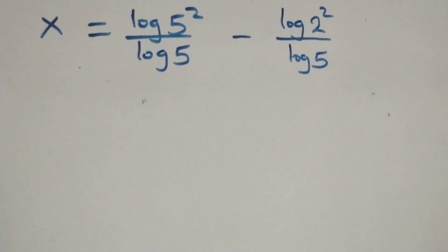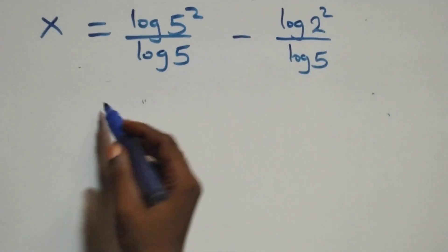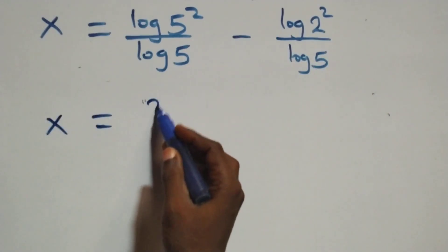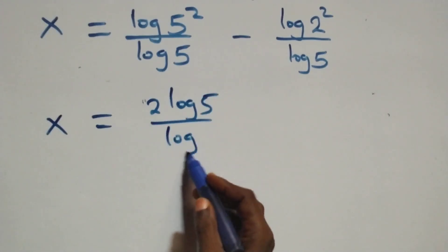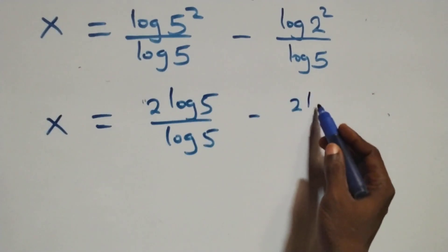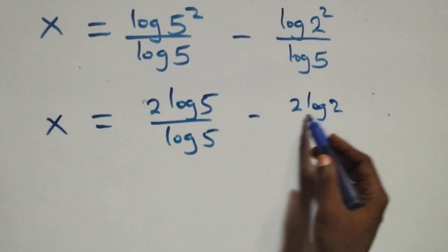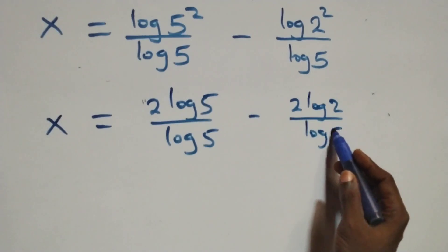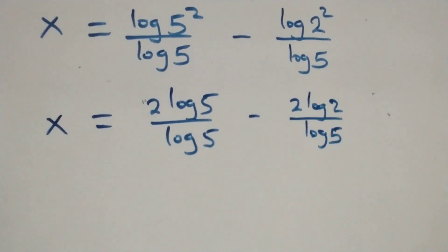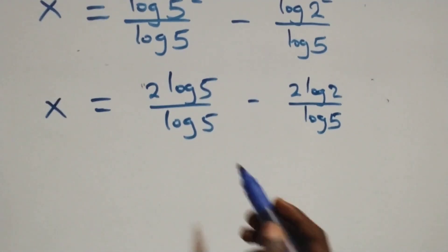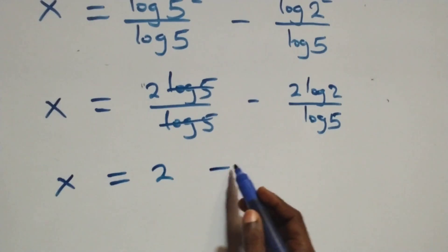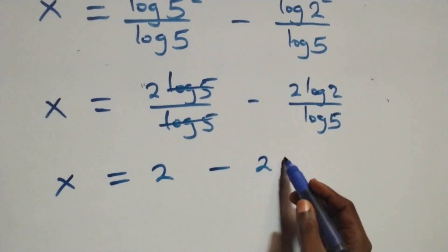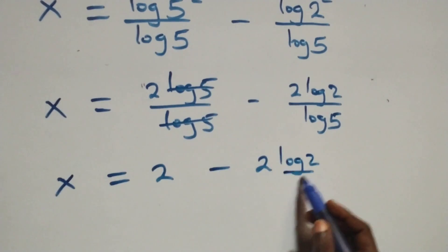Applying the power rule again, the 2 comes down in each term: x equals 2 log 5 over log 5 minus 2 log 2 over log 5. The log 5 terms cancel each other in the first fraction, leaving x equals 2 minus 2 log 2 over log 5.